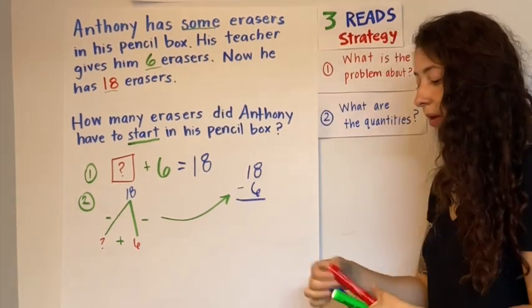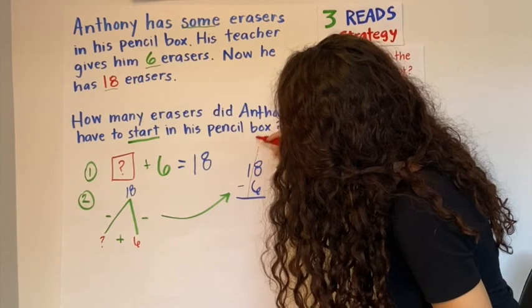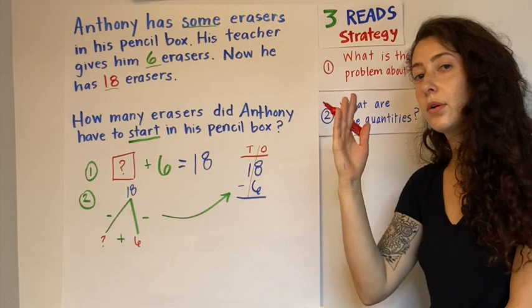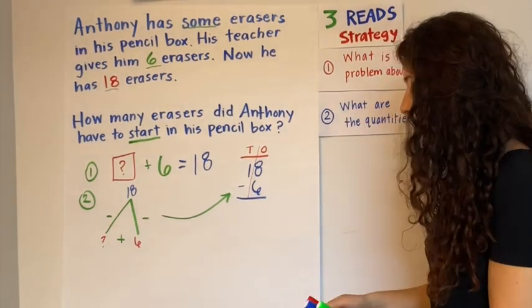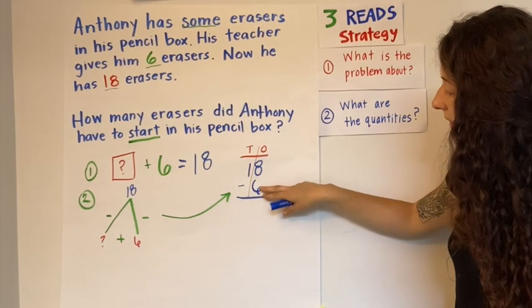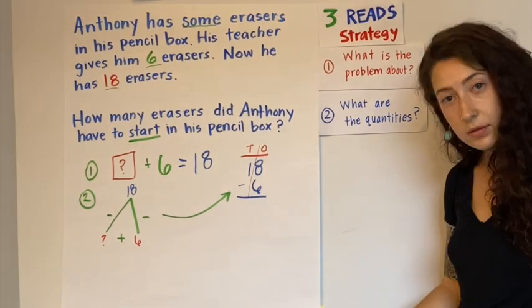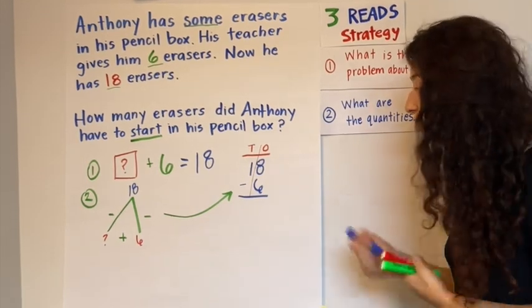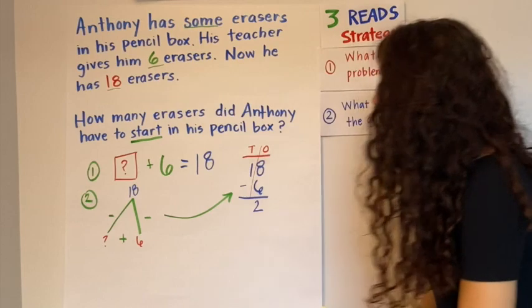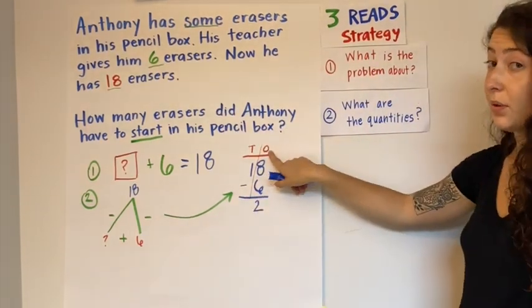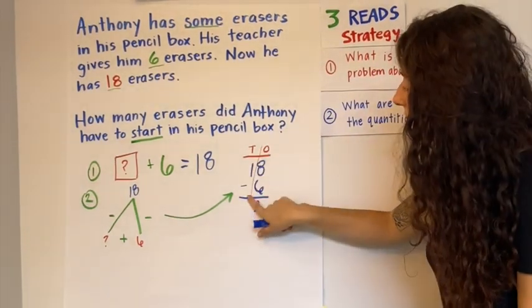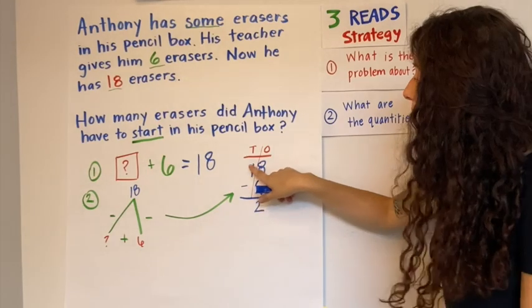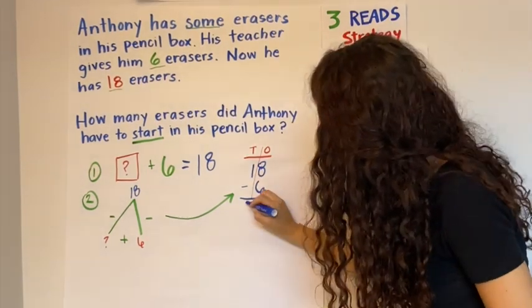Now don't forget, remember to label your tens and your ones when you're doing your vertical equation. So we look at this problem and we see, can I take away six from eight? Yes, you can. Eight minus six is, yes, it is two. Now I go on to my tens, because remember, we always start with the ones. Now I go to the tens place. One minus, and if there's nothing there, that means it's a zero. One minus zero is one.